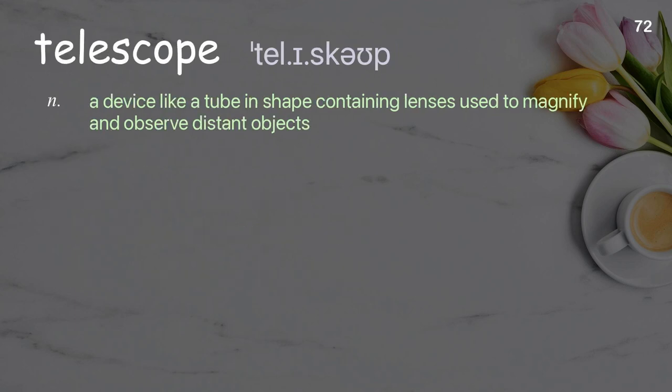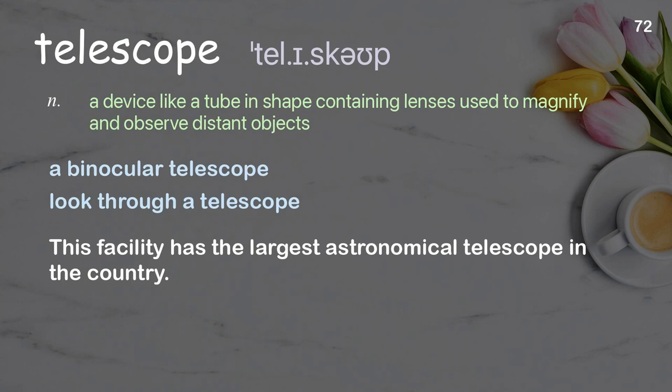Telescope. A device like a tube in shape containing lenses used to magnify and observe distant objects. Examples: a binocular telescope, look through a telescope. This facility has the largest astronomical telescope in the country.